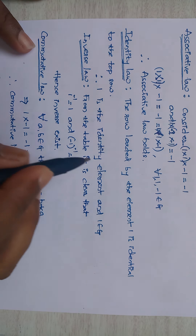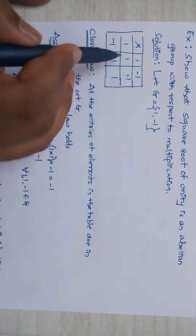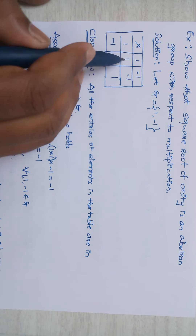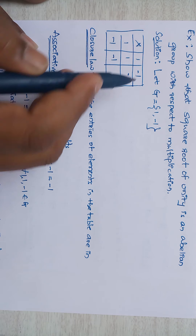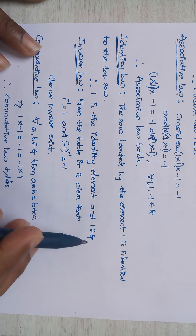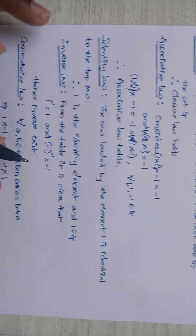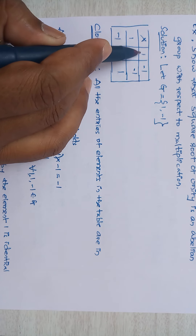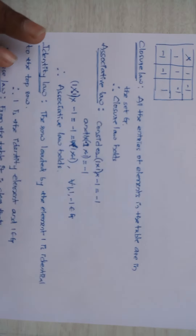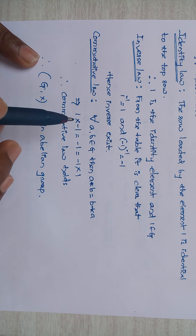Identity law: the row headed by element 1 — that is [1, −1] — is identical to the top row, so 1 acts as the identity element and 1 ∈ G. Therefore identity law holds. Inverse law: from the table, 1⁻¹ = 1 and (−1)⁻¹ = −1. Therefore for all elements, an inverse exists, and inverse law holds.